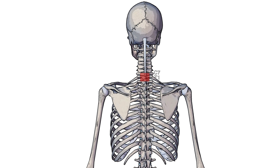The rhomboid minor muscle originates from the C7 to T1 vertebrae, specifically the spinous processes of these vertebrae. These are the little projections on the posterior of each of these vertebrae, which you can see right here.